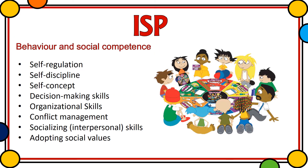One of the aspects that can be addressed within the ISP is the learner's behaviour and social competence. Under this heading can be included: self-regulation — the ability to monitor and manage your energy states, emotions, thoughts and behaviours in ways that produce positive results such as wellbeing, loving relationships and learning. Also self-discipline, the learner's ability to take responsibility for his or her own learning and to work within set boundaries. Self-concept — the learner's image of him or herself — decision-making skills, organisational skills, conflict management, socialising or interpersonal skills, as well as adopting social values.